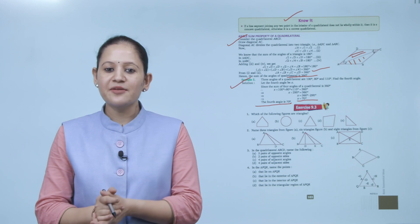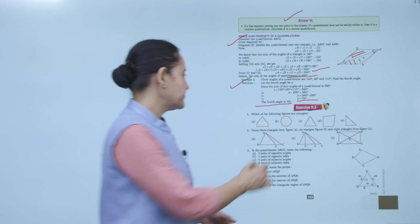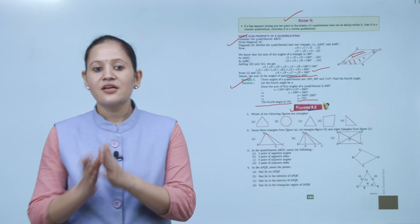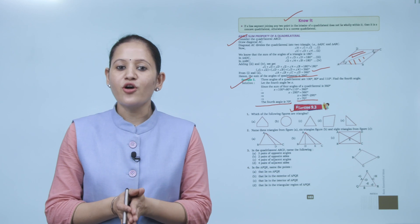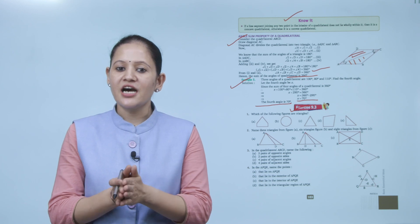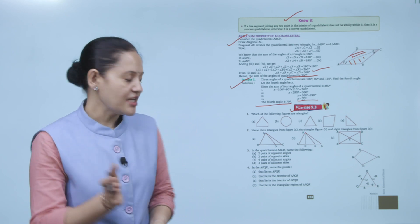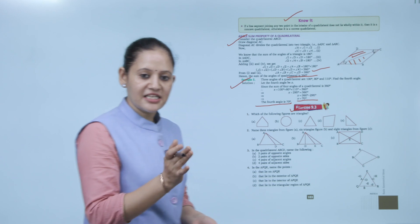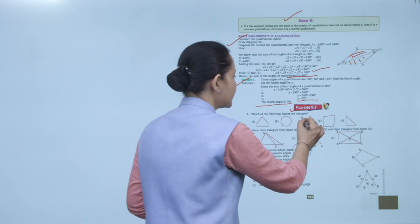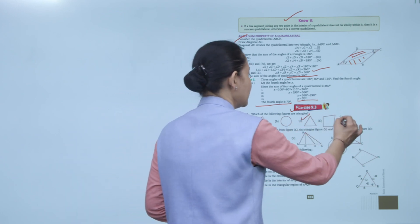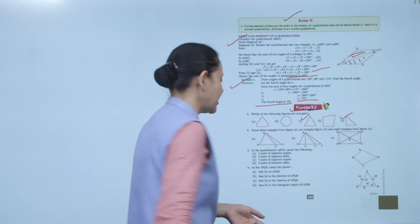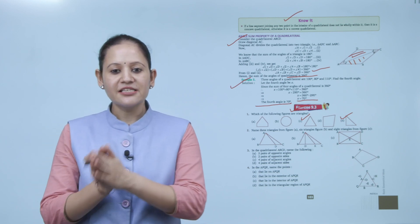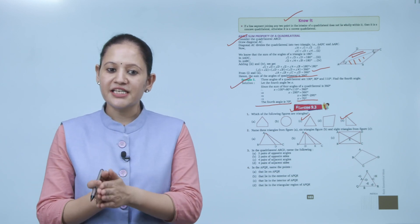Exercise 9.3: Which of the following figures are triangles? As we know, a triangle is made up of three line segments. So figures C and E are triangles. Practice all the questions of this exercise.